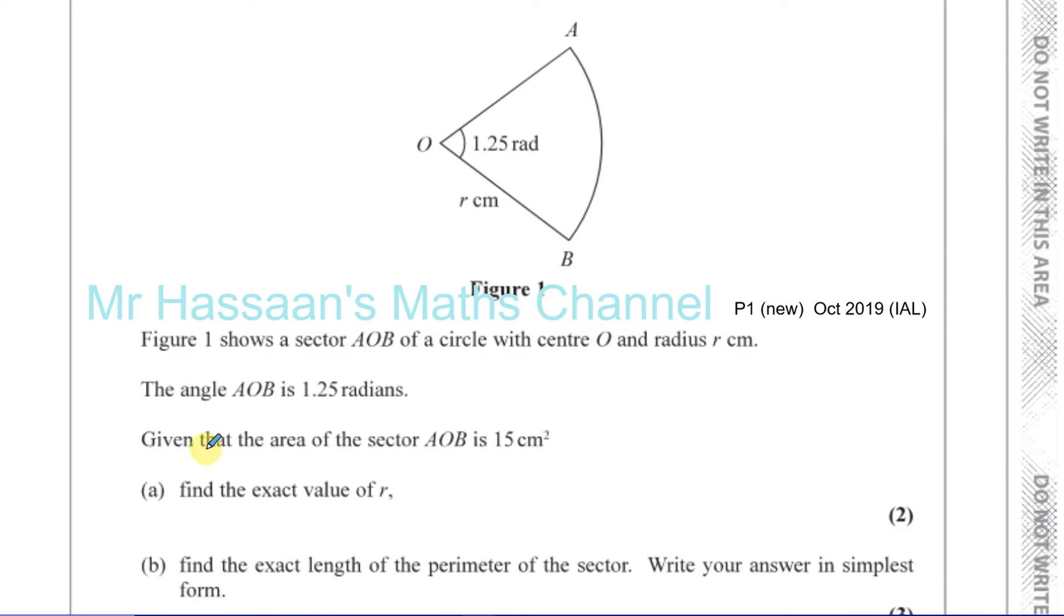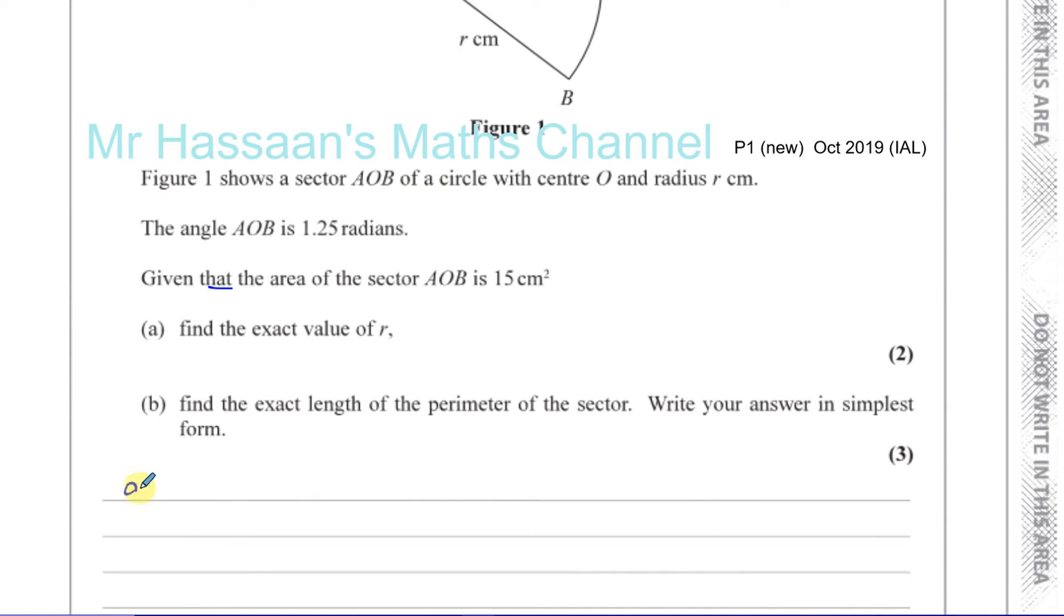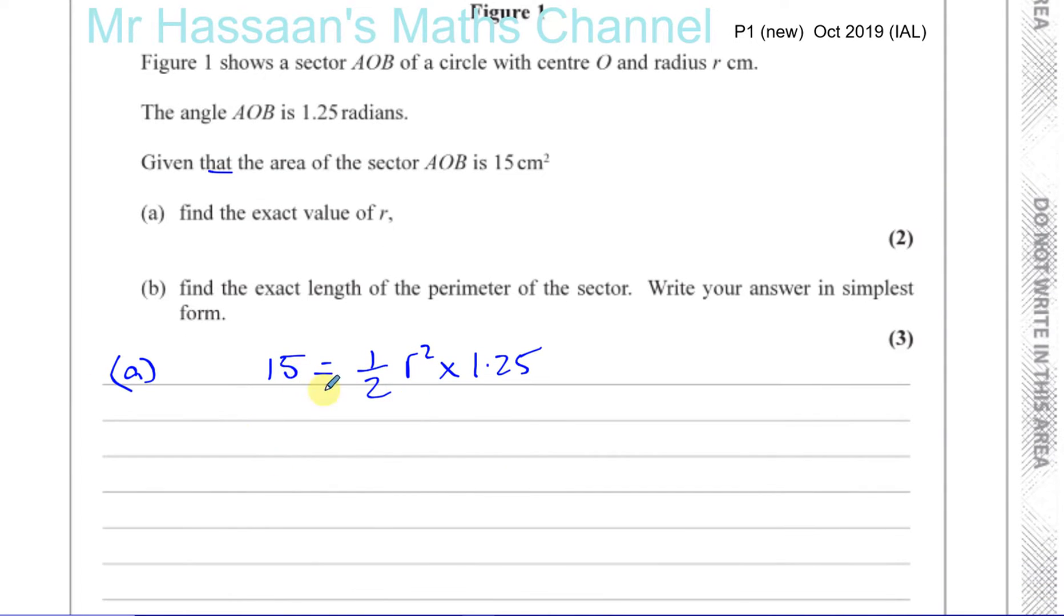In this case, we need to know the formulae for the area of sectors. And if the angle is given in radians, which it is, the area of a sector is ½ times R squared times theta. So the exact value of R, we know that the area of this sector is 15. So we can say that 15, which is the area, is equal to ½ times R squared, which we have to find, times 1.25.